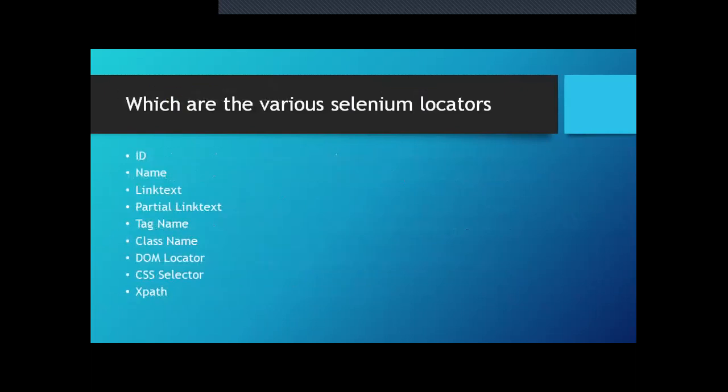The next question: which are the various Selenium locators and explain their syntax? Basically, there are nine locators: ID, name, link text, partial link text, tag name, class name, DOM locator, CSS selector, and XPath.